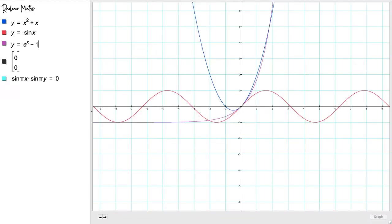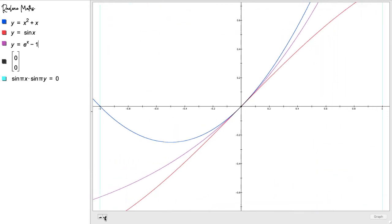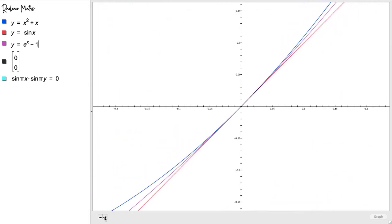The blue parabola, the red sinusoid, and the purple exponential growth curve all pass through the point (0,0). But they have something else in common. When we zoom in at that point, all three curves start to look straight.